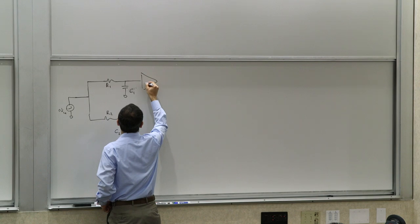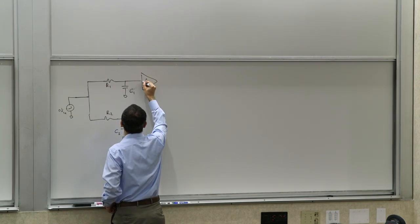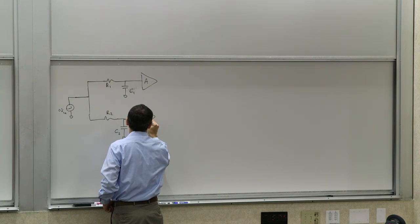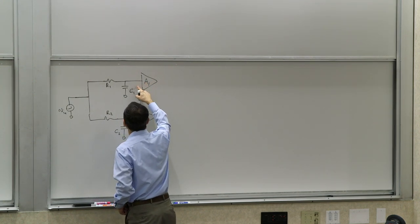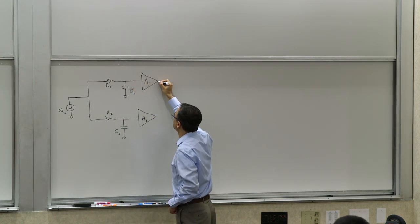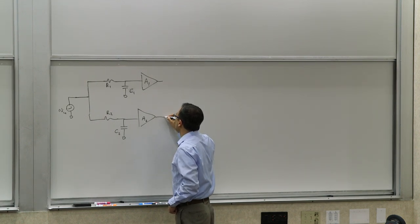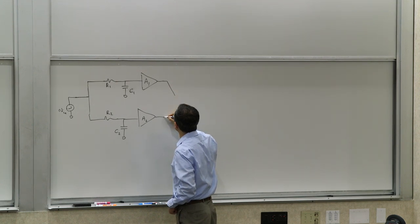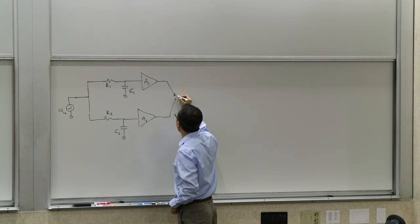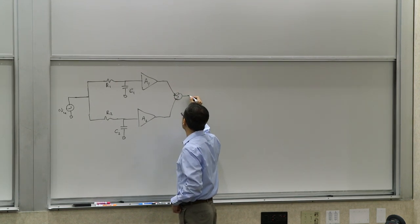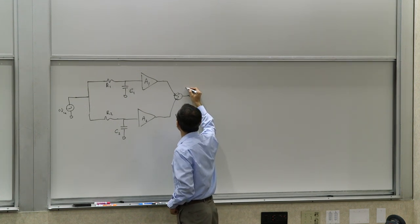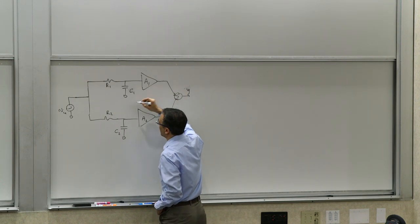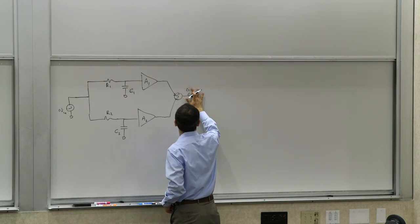Imagine there's some ideal amplification — an ideal voltage amplifier with infinite input impedance and zero output impedance. We're not really concerned with how we combine the outputs; somehow we are adding them ideally. This gives us V_out.